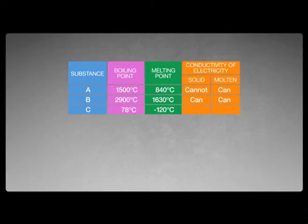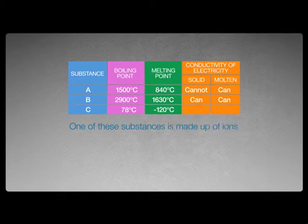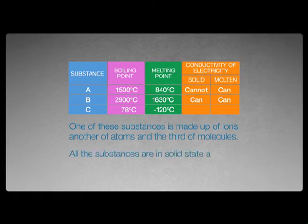Moving on to the properties of substances. We need to know the main properties of atoms, molecules and ions. Let's find out what these properties are by answering these questions. The table shows the physical properties of substances A, B and C. One of these substances is made up of ions, another of atoms and a third of molecules. All the substances are in solid state at room temperature. Question A: what type of substances are A, B and C?